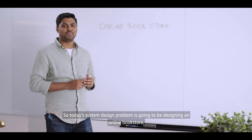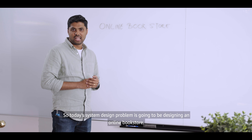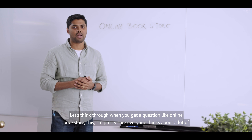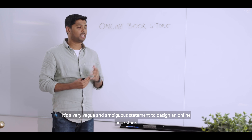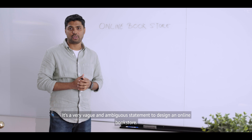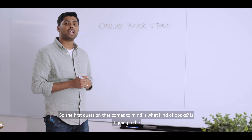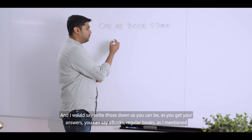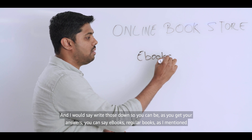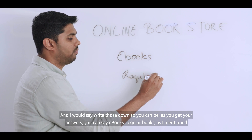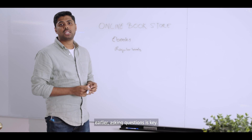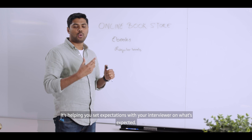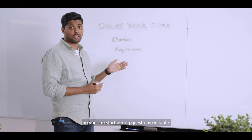Today's system design problem is going to be designing an online bookstore. Let's think through when you get a question like that — it's a very vague and ambiguous statement. The first question that comes to mind is: what kind of books? Is it going to be eBooks or just regular books? Write those down. Asking questions is key — it helps you clarify the requirement and set expectations with your interviewer.